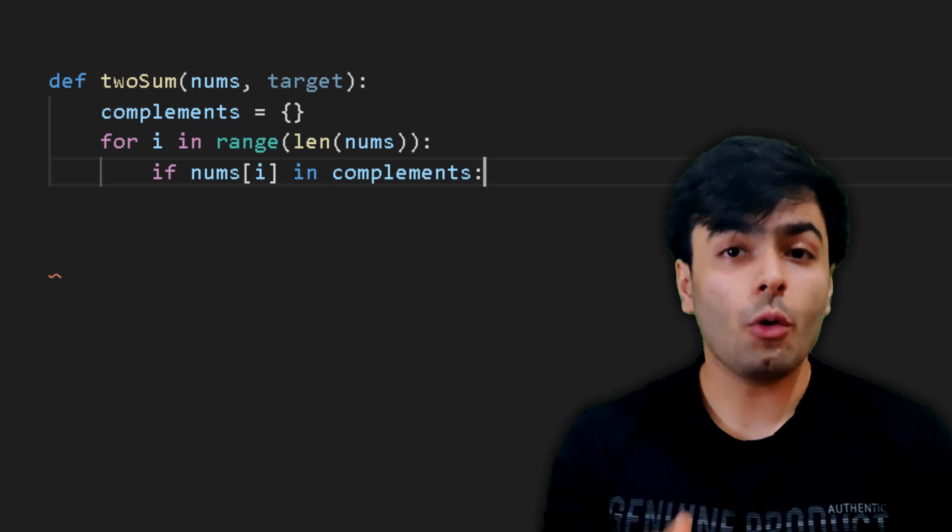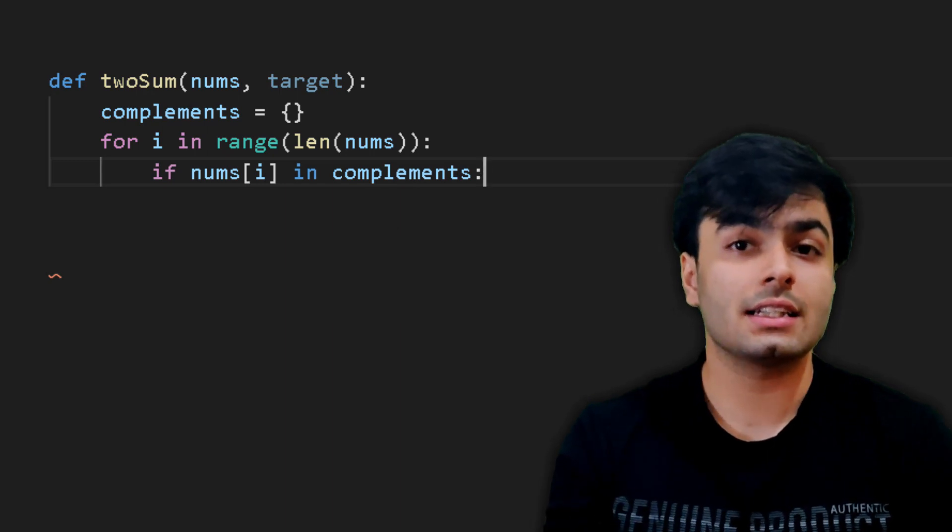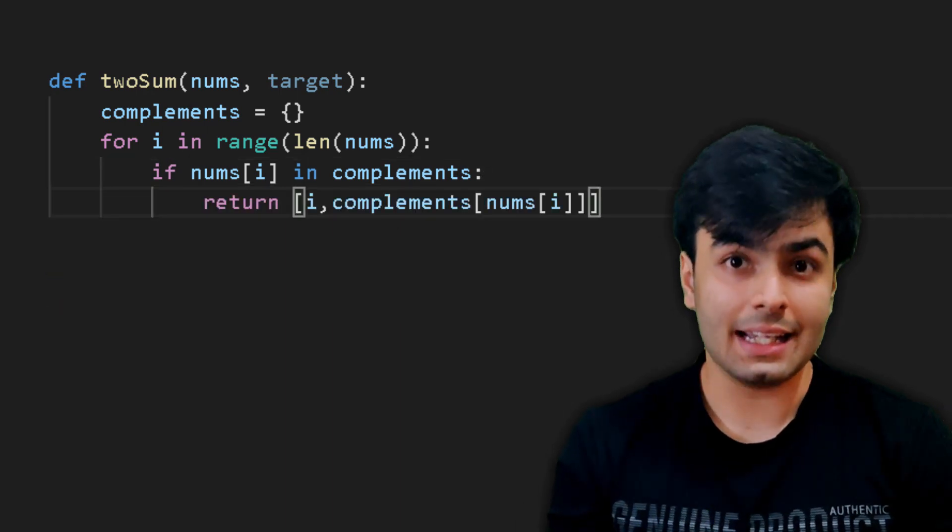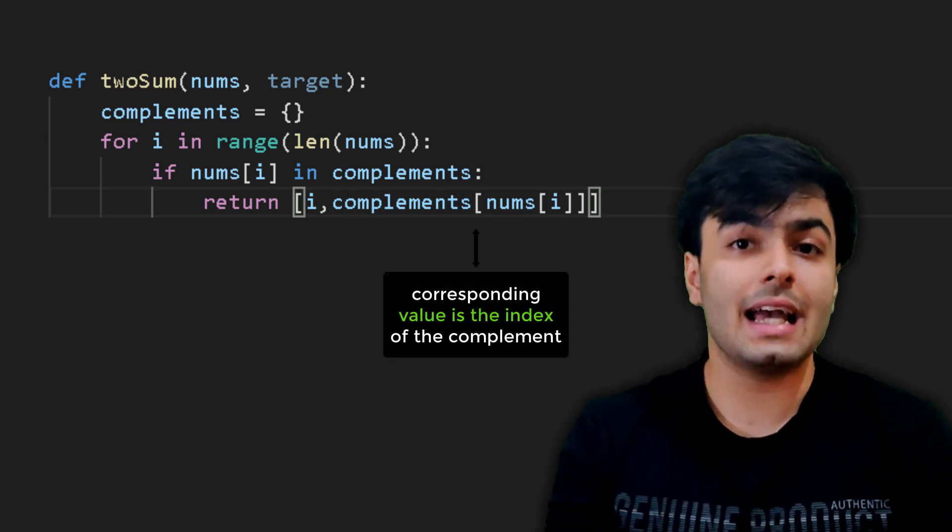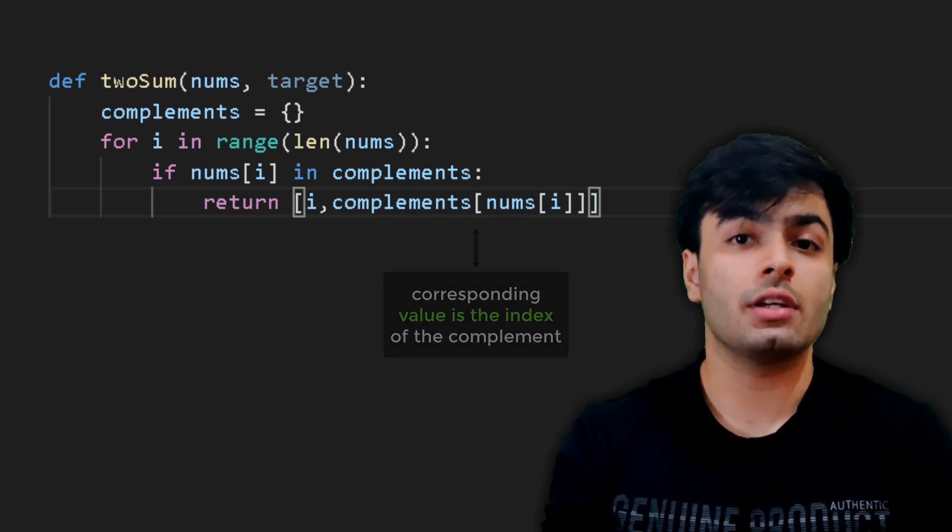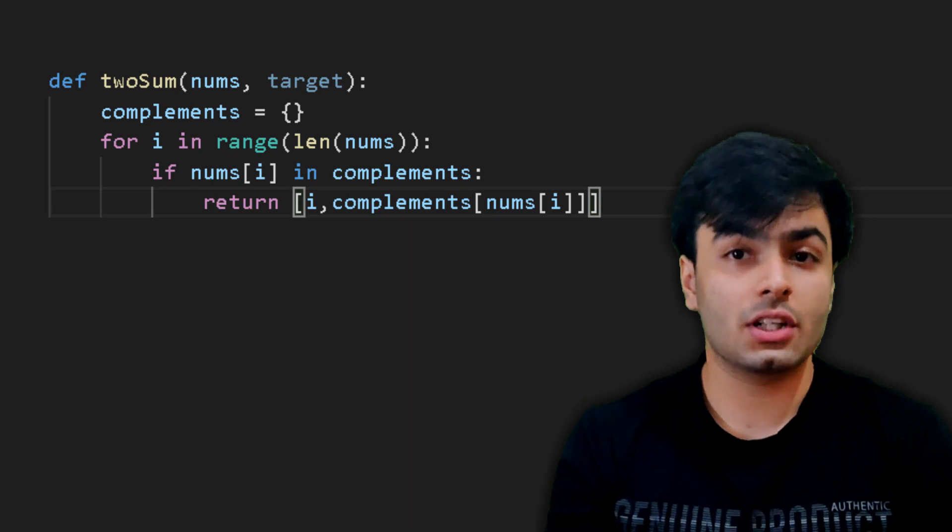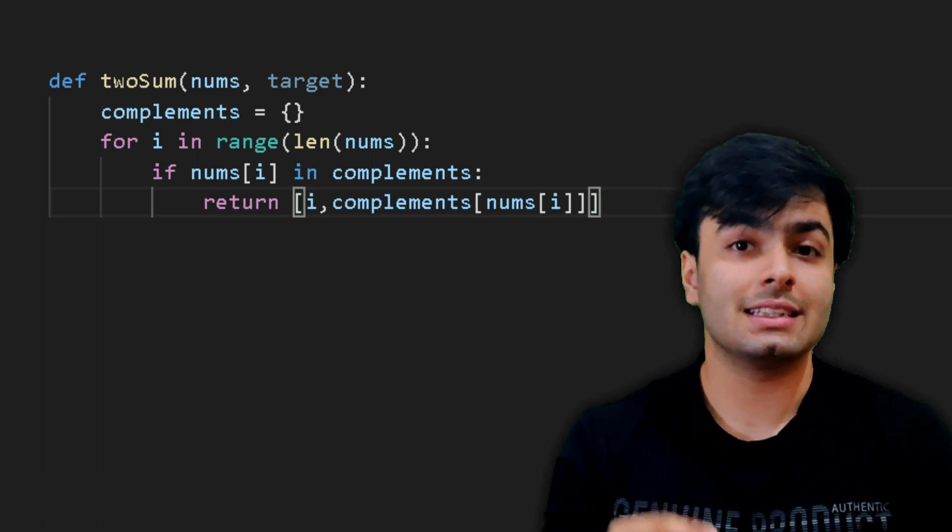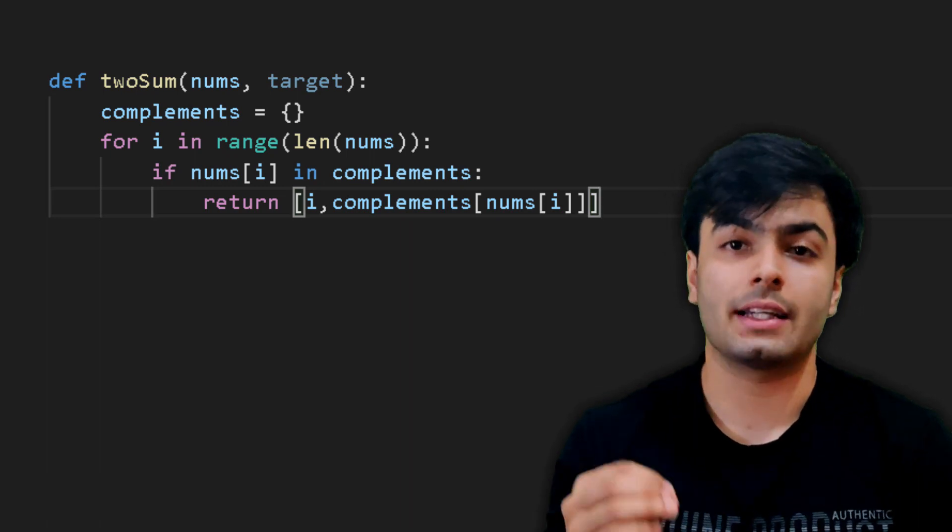If this condition is true, all we have to do is return a list of the index number of the current term, which is i, and the value corresponding to the current term, which can be accessed by writing the name of the dictionary, followed by square brackets, and the current term, which as we saw earlier, is accessed by writing nums square brackets i.